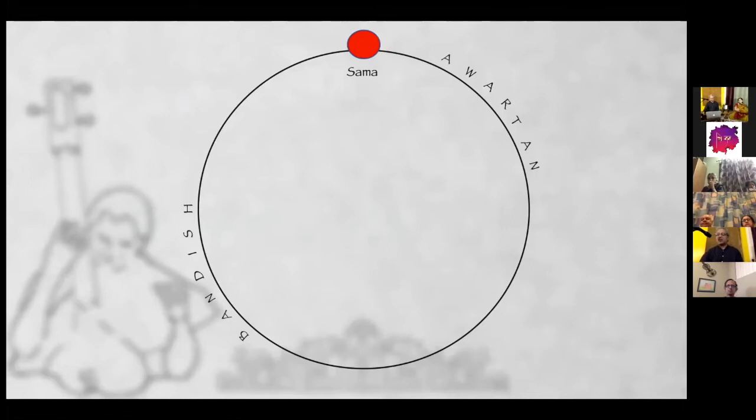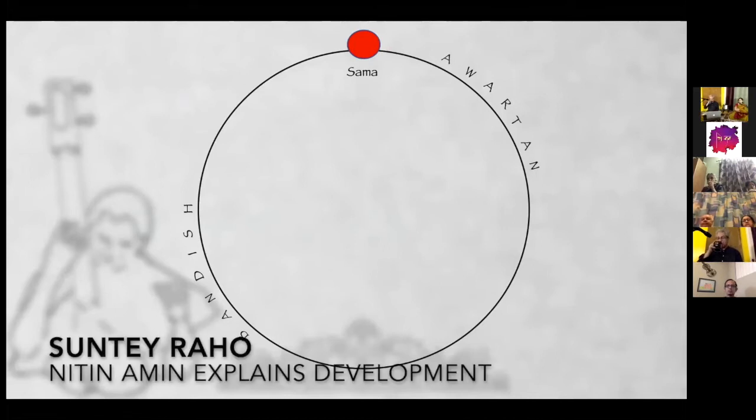And Sama is probably the most important point in the whole development. The Sama is going to repeat after every Avaratan. It is the starting point of the Avaratan or the end point of the last Avaratan. The Bandish also has the Mukhda which we saw last time, and this Mukhda begins at some point and then takes you to the Sama.